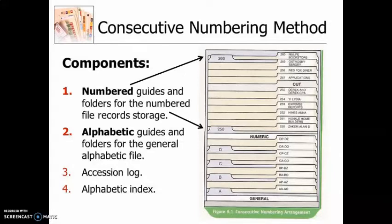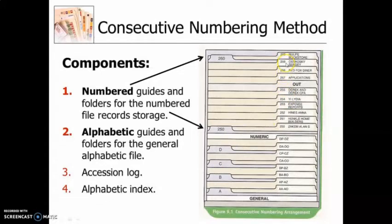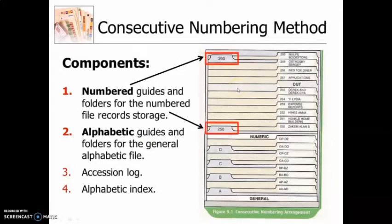Looking at the numbered guides and folders on screen: the guide shows numbers like 250 and 260. Imagine this is a drawer — it begins with 250, followed by 260, because under guide 250 you have folders 250 through 259, and then the next guide is 260. This is arranged in ascending order — the consecutive numbering method.